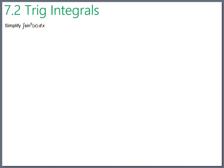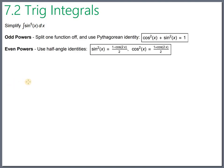Here's the strategy: when you have an odd power of a trig function, the recommendation is to split one function off and then use the Pythagorean identity — sine squared plus cosine squared equals one. For even powers, a different approach is used. Let's see how the odd-power strategy works out.